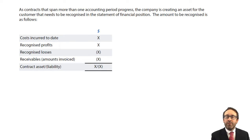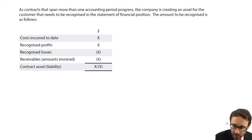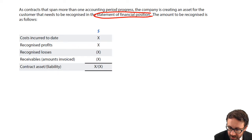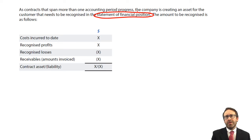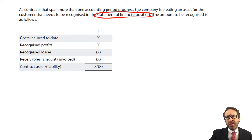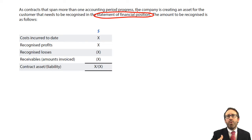What we're going to do now is add a fourth and final step, and that is to look at what happens within the statement of financial position. As you're incurring costs — labour costs, materials costs — you're effectively developing an asset that is going to be transferred at the end of the contract to your customer. So how do we work out the value of that asset within the statement of financial position?